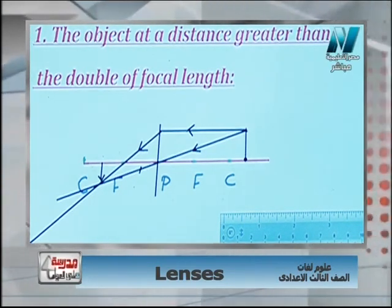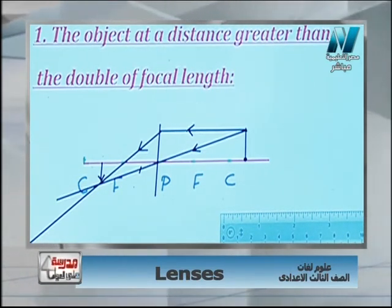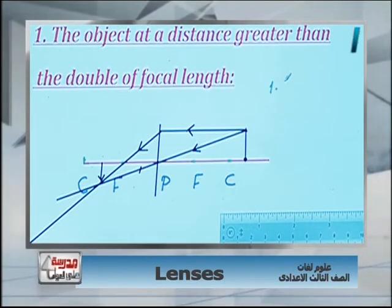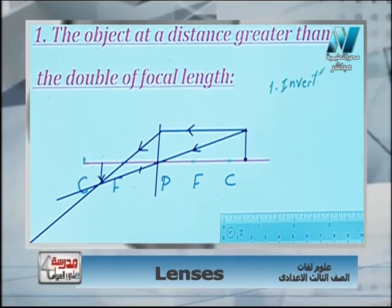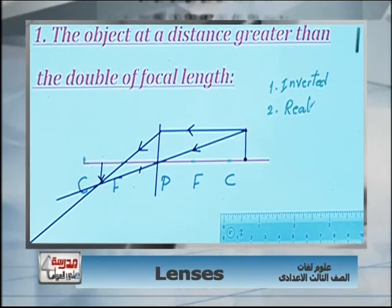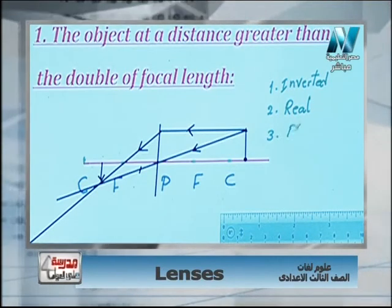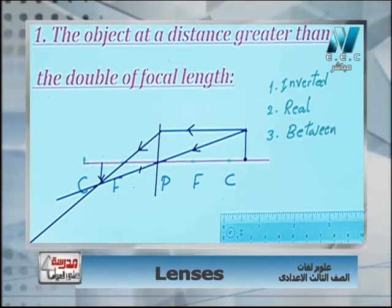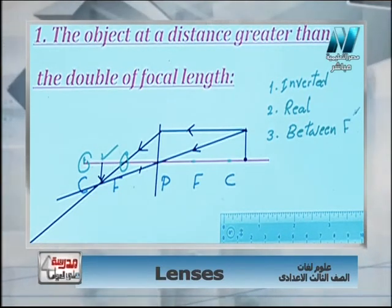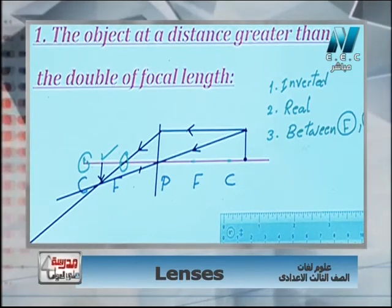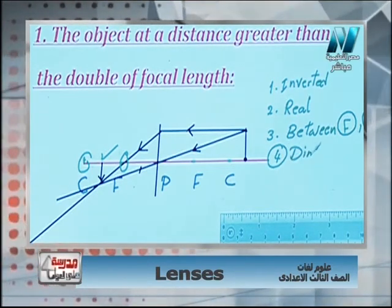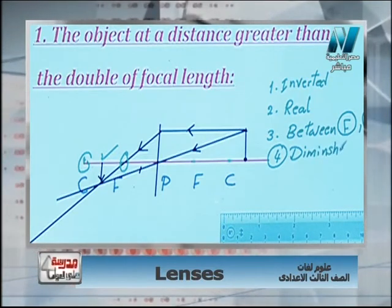The properties of the image in this case are: number one — inverted; number two — real, which means it can be received on a screen; number three — positioned between F and C; number four — diminished, which means smaller than the object.